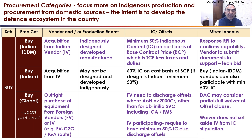The first category in the BUY scheme is BUY Indian IDDM — indigenously designed, developed, and manufactured. It is acquisition only from an Indian vendor. A minimum of 50 percent indigenous content has to be shown on a cost basis of the base contract price, which is the total contract price less taxes and duties. The SHQ ascertains this during the response to the RFI — request for information — confirming the vendor's capability. The vendor has to submit documents and support during the technical bid.